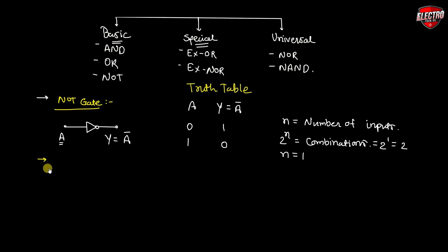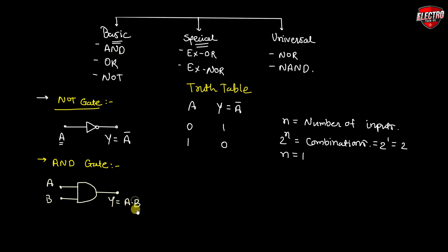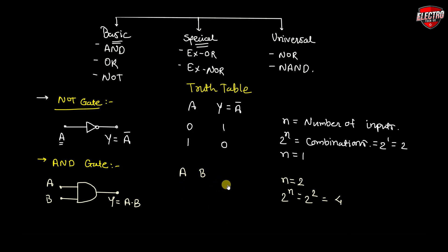The second logic gate is the AND gate. The symbol of the AND gate is given like this. Input A, B and output Y is equal to A dot B, or we can say A multiplied by B. We have two inputs, so the number of possible combinations is 2 raised to 2, which means four possible combinations. A and B are the input signals and Y = A·B is the output signal.